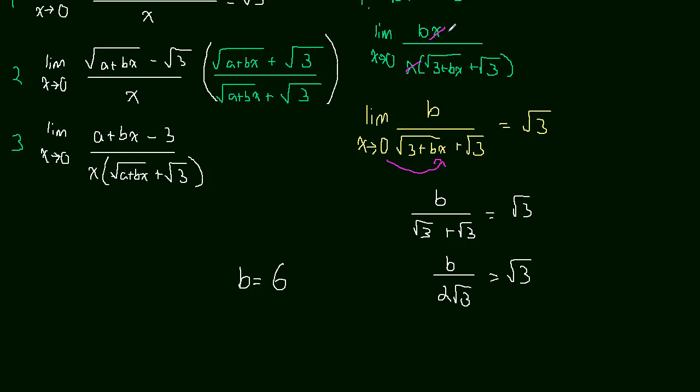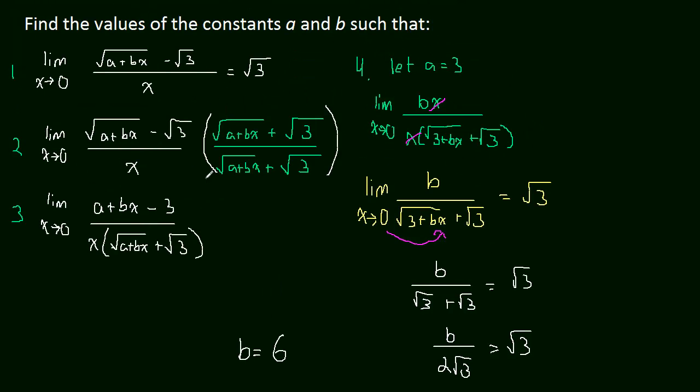And if we let A equal 3 and B equal 6, then that limit will turn out to be radical 3. So this wasn't actually too hard, although maybe looking at it, it seemed a little bit difficult. But we found A and B. A equals 3, B equals 6. And they're nice whole numbers.